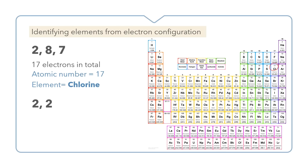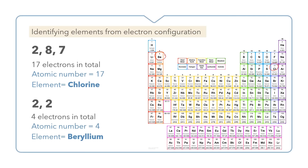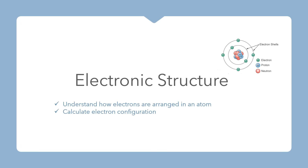Let's look at another example: if the electron configuration is 2,2, we add them up to get a total of four electrons, meaning the atomic number is also four. Looking on the periodic table, the element with atomic number four is beryllium. Hopefully you can now understand how electrons are arranged in an atom and can calculate the electron configuration.